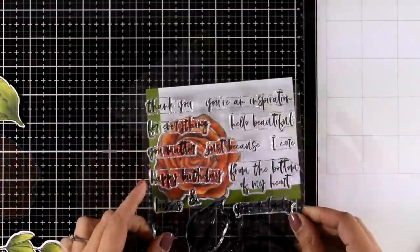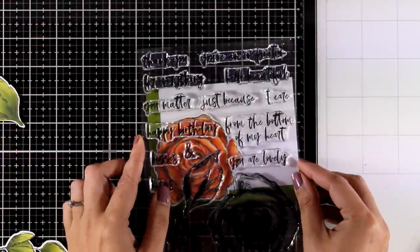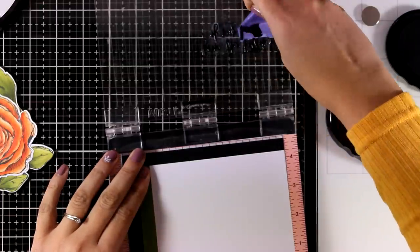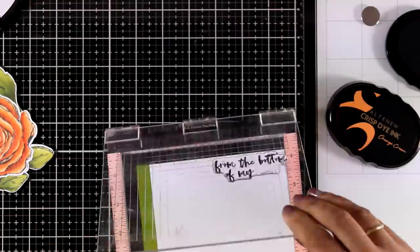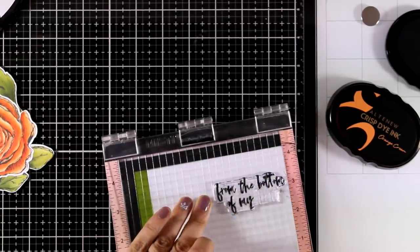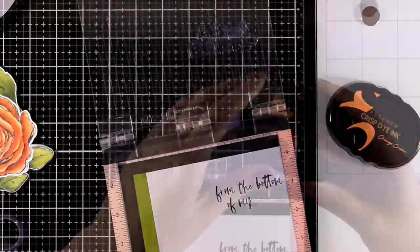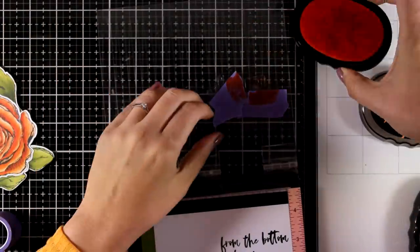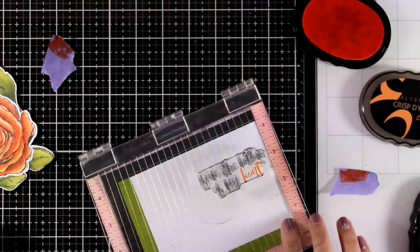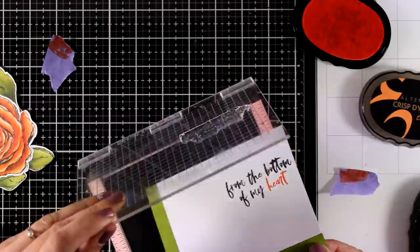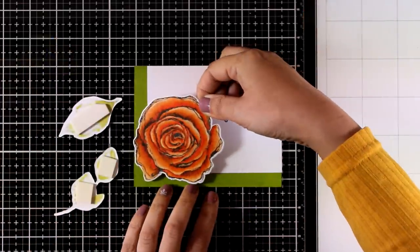At the top right corner I am going to stamp my sentiment again from the same stamp set as the rose. I will go with the sentiment that says from the bottom of my heart and I am going to combine black with one of the oranges that matches perfectly the color of the rose. So I masked off the word heart and I stamped the rest of the sentiment with black and now I am going to stamp only the word heart with orange. I am super happy with the result of my two-colored sentiment and I find it really cool when I can match my markers with my inks.